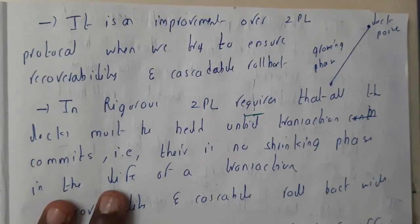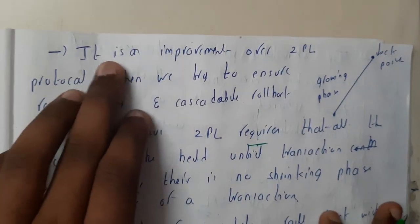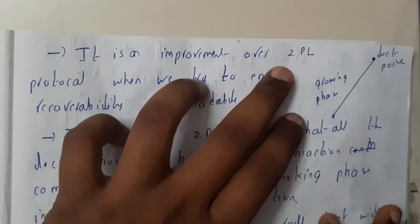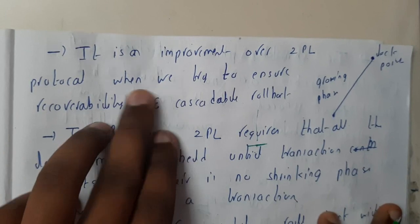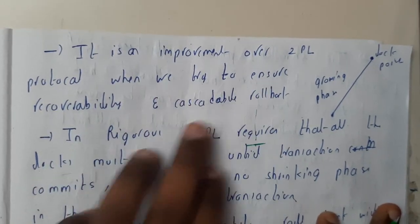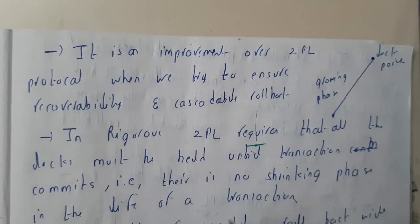Now let's go through the theory. It is an improvement over 2PL - an updated version of the 2PL protocol where we ensure recoverability and cascadable rollback.